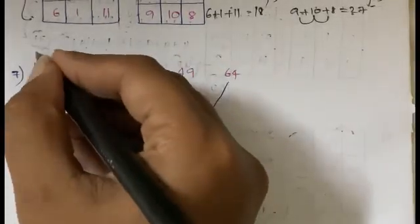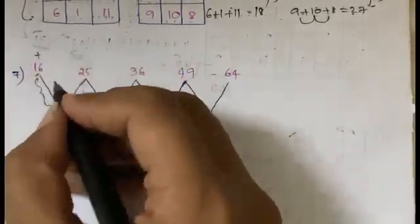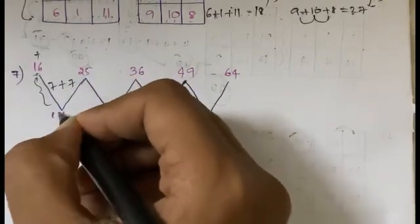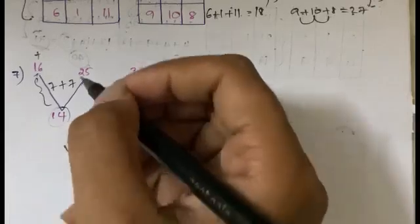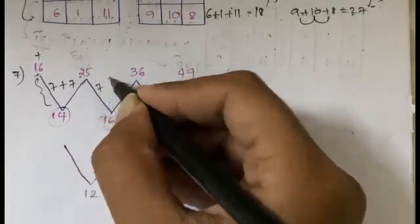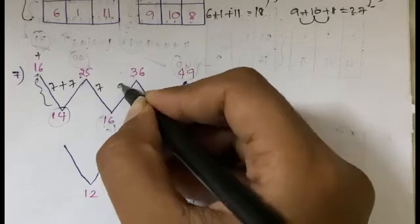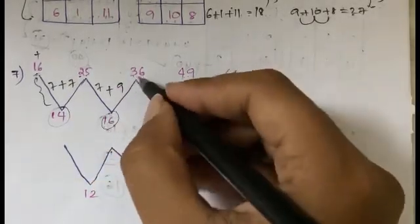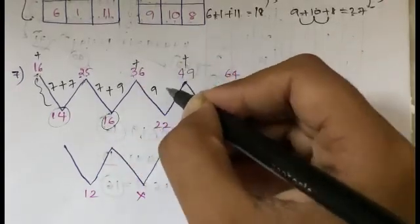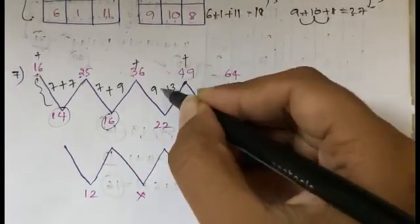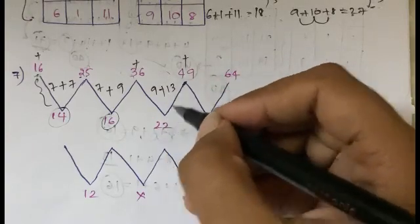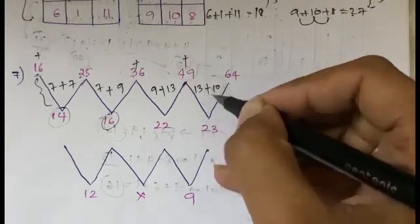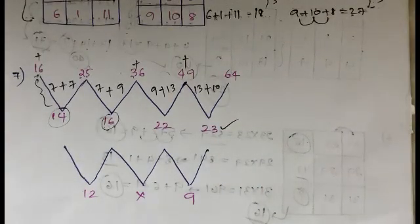Let's apply a digit-sum operation: 1 plus 6 gives 7, and 2 plus 7 gives 7, so 7 plus 7 gives 14. Then 2 plus 5 is 7, 3 plus 6 is 9, and 9 plus 7 gives 16. Again, 3 plus 6 is 9, 4 plus 9 is 13, and 13 plus 9 gives 22. And 9 plus 4 is 13, 6 plus 4 is 10, and 13 plus 10 gives 23. This is the pattern.